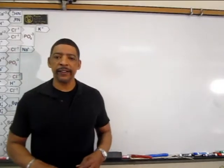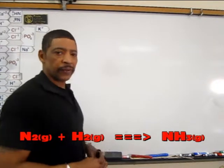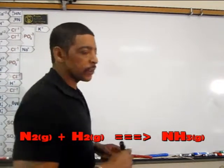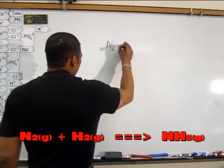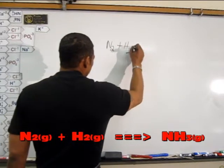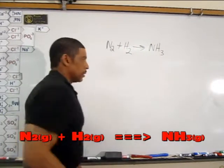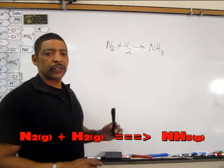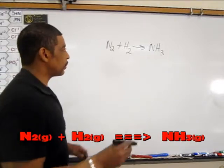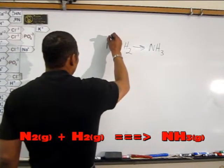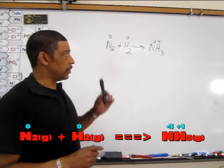Let's begin by identifying the half reactions in a simple synthesis reaction. Consider the following: when nitrogen gas reacts with hydrogen gas, ammonia, NH₃, may be formed. To determine the half reactions in this particular reaction, simply first write in the oxidation numbers. The oxidation number of any element, diatomic or not, will be zero.